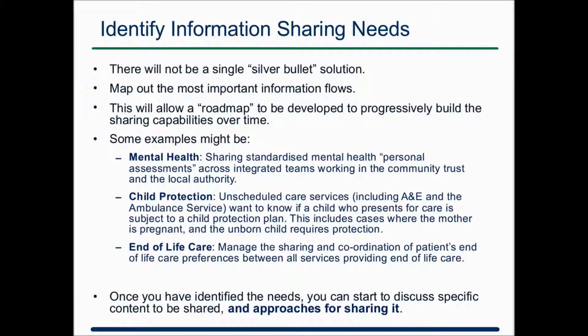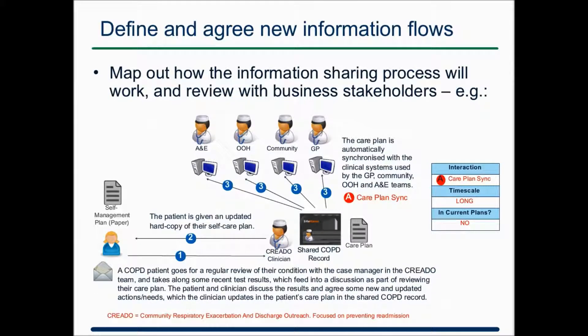Once you've established your high-level needs and vision, you can build a roadmap, prioritise, and break down in more detail what information flows might look like. You really need to get the clinical and health and social care communities involved, as they're the ones who'll be using this. You can map out in fairly simple terms who the different teams and individuals are, what information they're recording, and where it needs to flow — who needs to see it, who needs to update it. That tells you what the existing systems need to do and what new things you need to put in place.